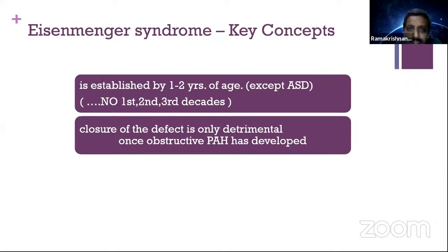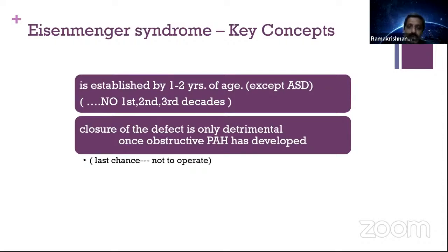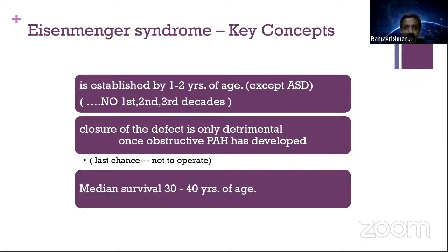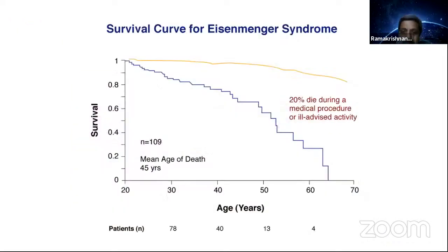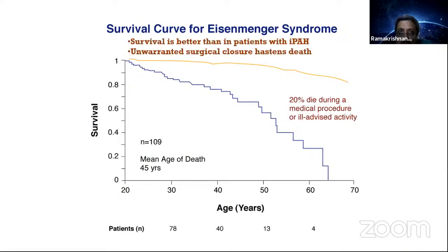The most important fundamental understanding: closure of the defect is only detrimental once obstructive pulmonary hypertension has developed. The median survival in uncomplicated Eisenmenger lesions is 30 to 40 years. Twenty percent of deaths happen because of ill-advised activities like pregnancy or medical procedures. Unwanted surgical closure can hasten death.